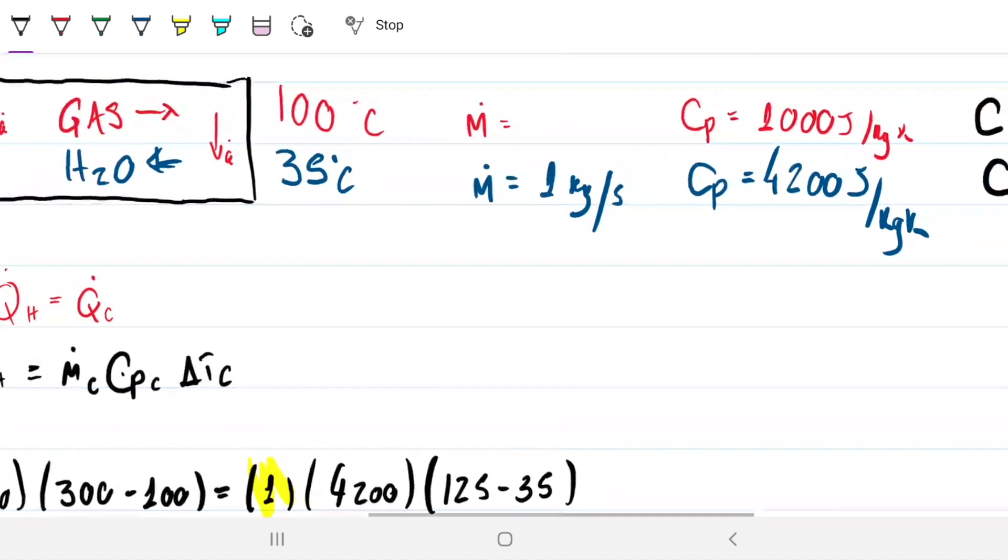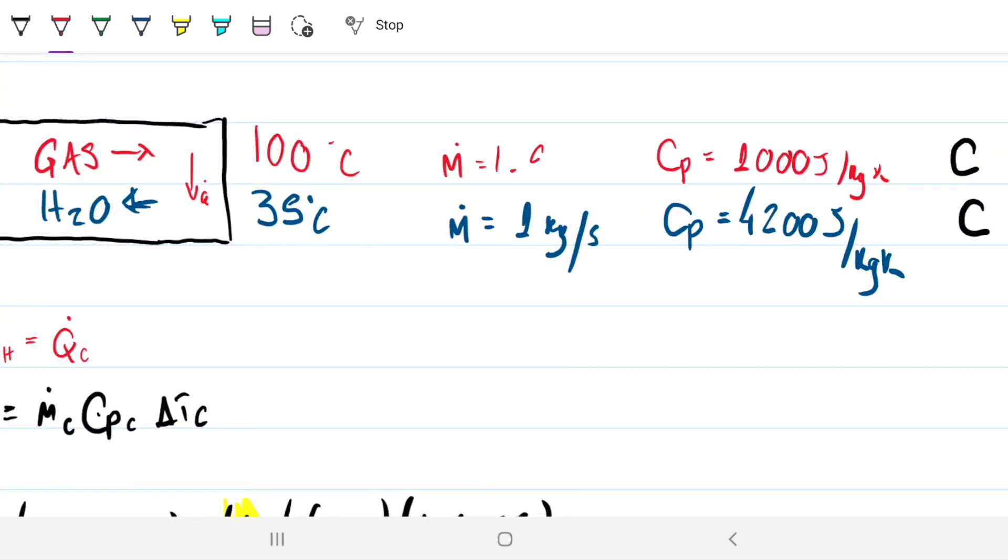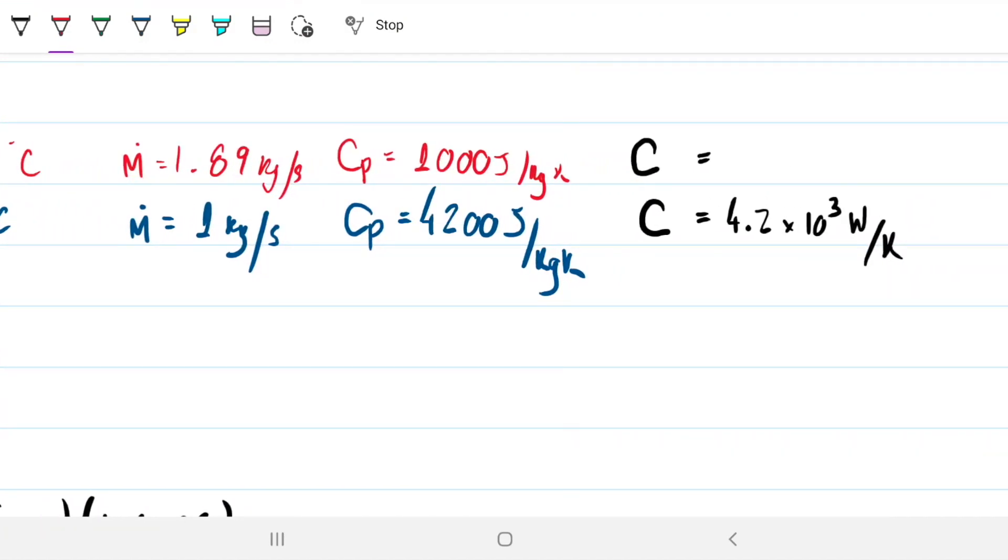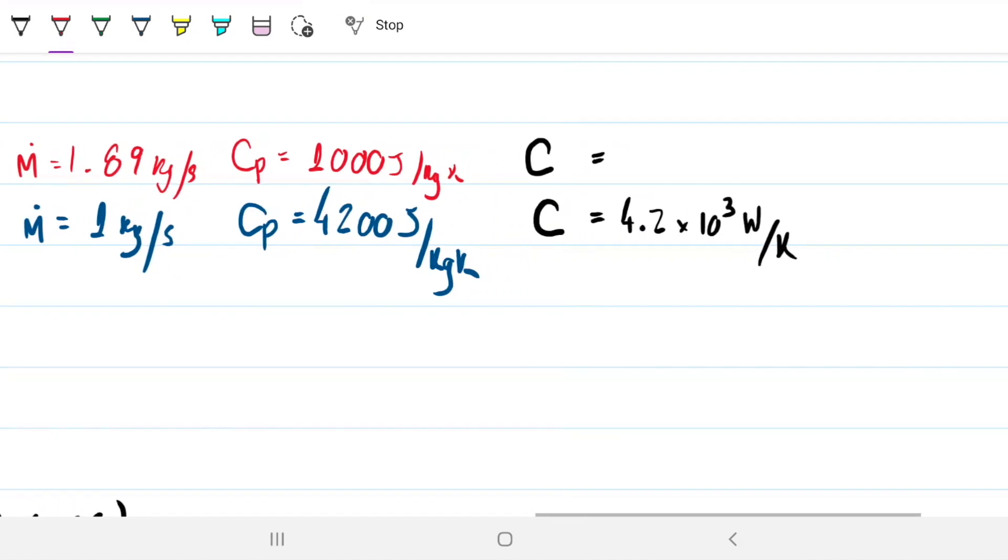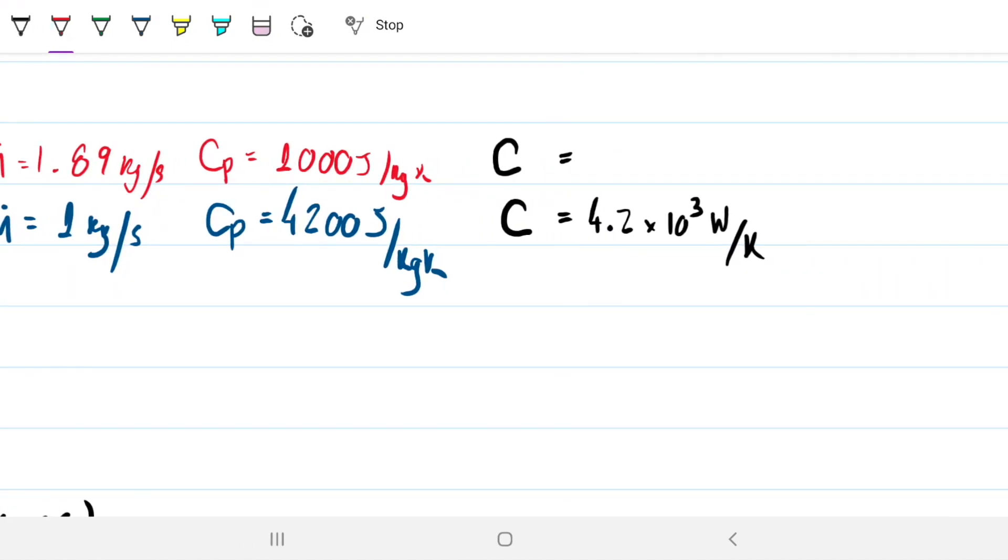So now we're going to go back here, and then we can put, so this is 1.89. So therefore I can calculate now my capacity rate for the hot. I'm doing this in black, and this turns out to be 1.9 times 10 to the third watts per Kelvin. All right, now at this point in time we can determine which one is the largest one, which one is the smallest one, so this one automatically becomes max, this becomes min, and then we can go on with our NTU method.